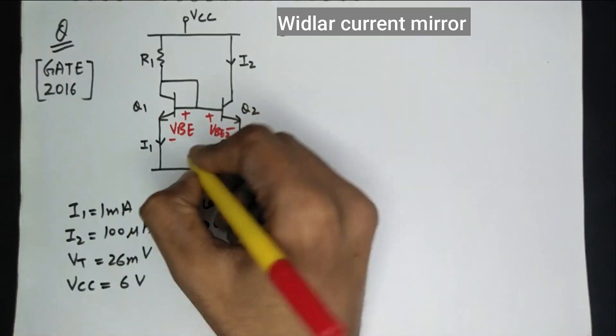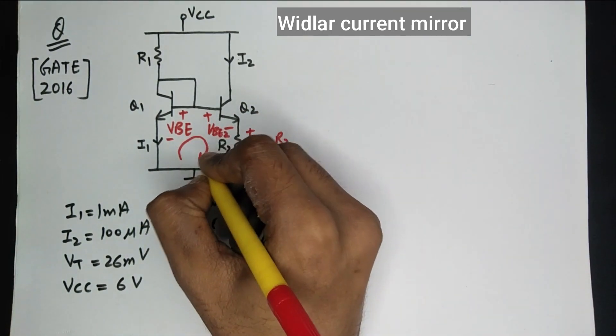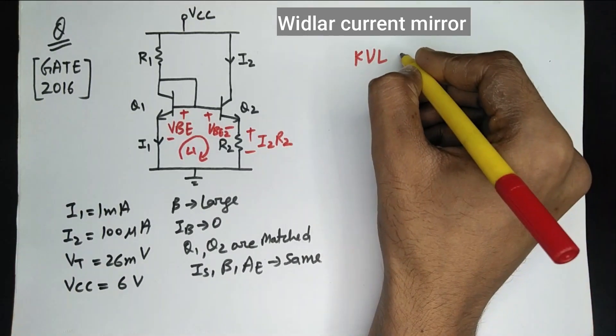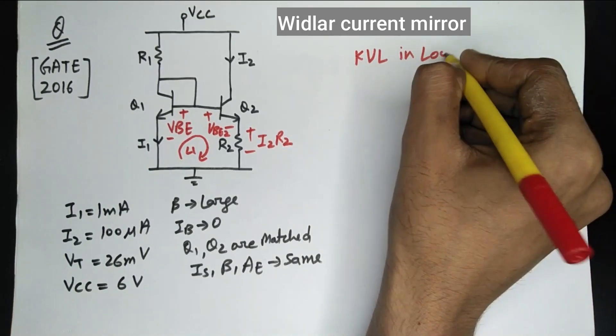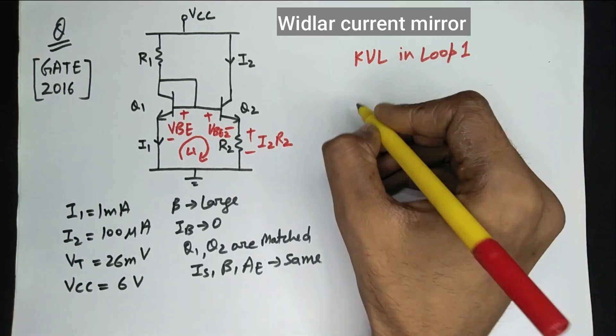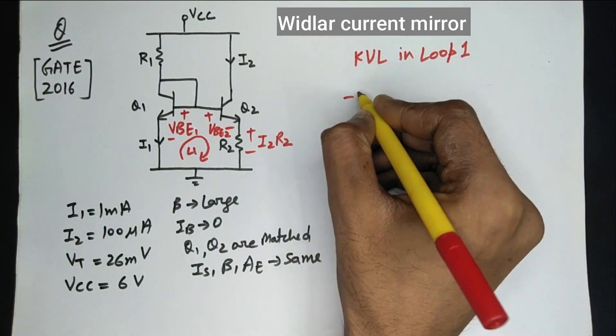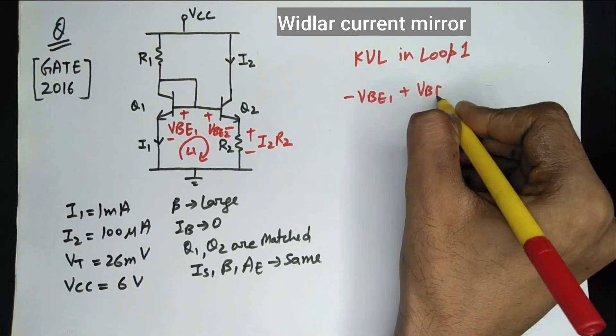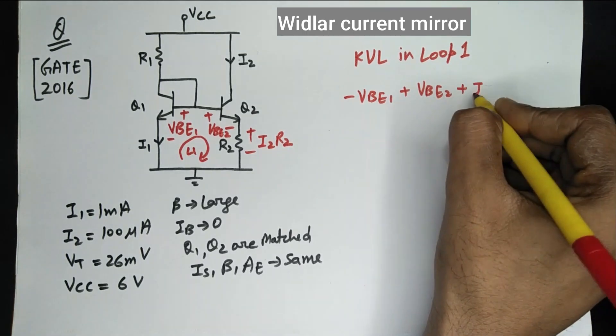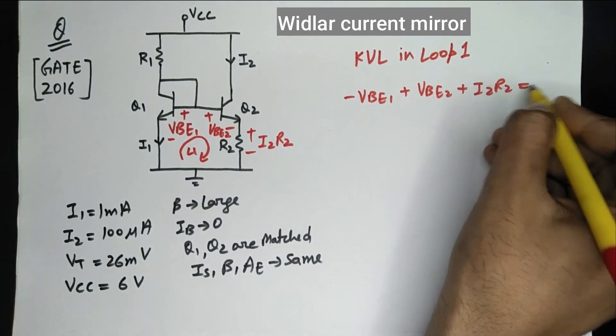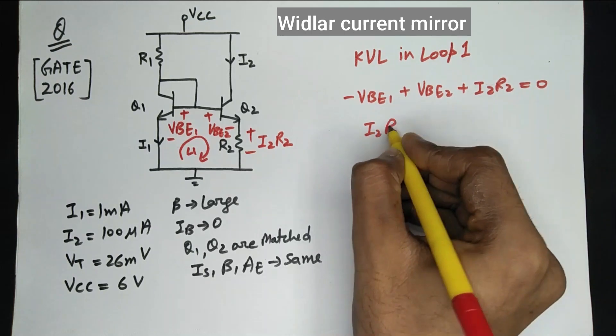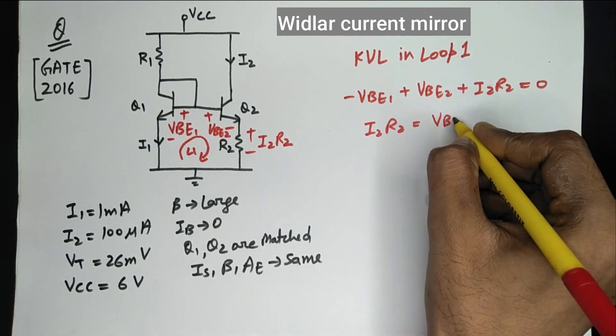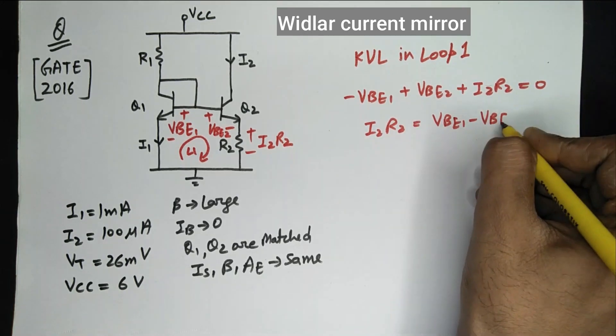Now let's apply KVL in this loop 1, and we will get negative VBE1 plus VBE2 plus I2*R2 equals to 0. We will get I2*R2 equals to VBE1 minus VBE2.